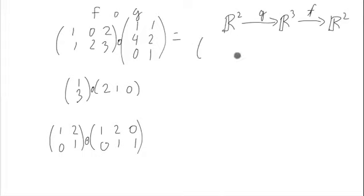So our result should have two columns, because its domain is 2, and two rows, since its codomain is R2. So it should look something like this.